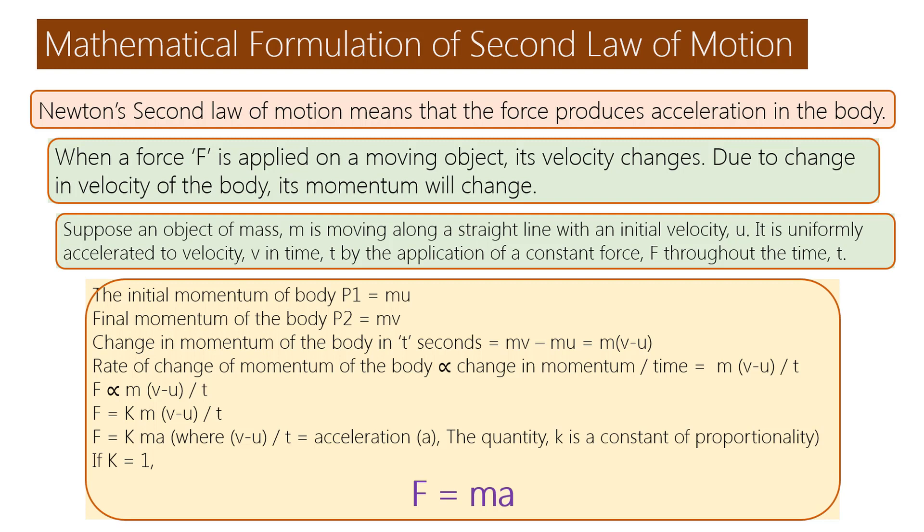Change in momentum of the body in T seconds is equal to MV minus MU, which equals M into (V minus U). Rate of change of momentum of the body is directly proportional to M(V-U)/T.